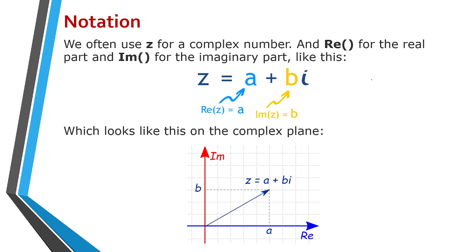So we often use z for a complex number, and Re for the real part and Im for the imaginary part. Like this: z equals a+bi. So a is the real part, then bi is the imaginary part, which looks like this on a complex plane. z equals a plus the complex number equals a+bi.